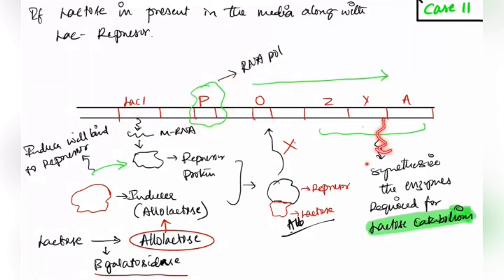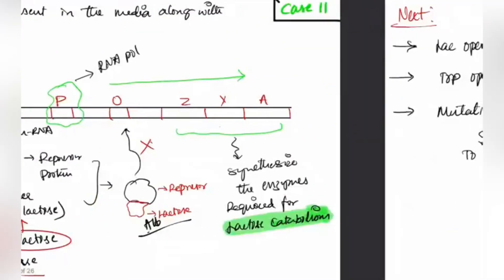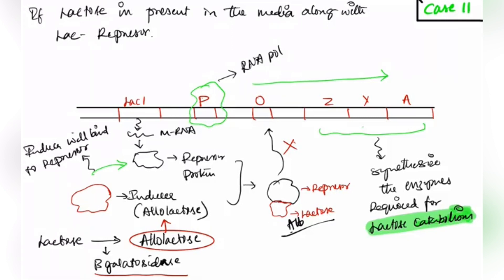Since the allolactose-bound repressor cannot bind to the operator region, RNA polymerase normally comes and binds to the promoter region, bypasses the operator, and transcribes all three genes. This enables complete lactose catabolism. Transcription is switched on in the presence of lactose, which explains the complete mechanism of lac operon regulation in the presence and absence of lactose.